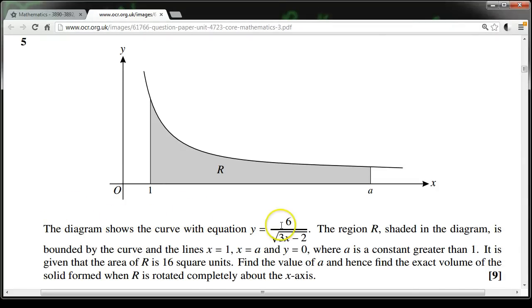The diagram shows the curve with equation y equals 6 over the square root of 3x minus 2. The region R, shaded in the diagram, is bounded by the curve and the lines x equals 1, x equals a, and y equals 0, where a is a constant greater than 1.